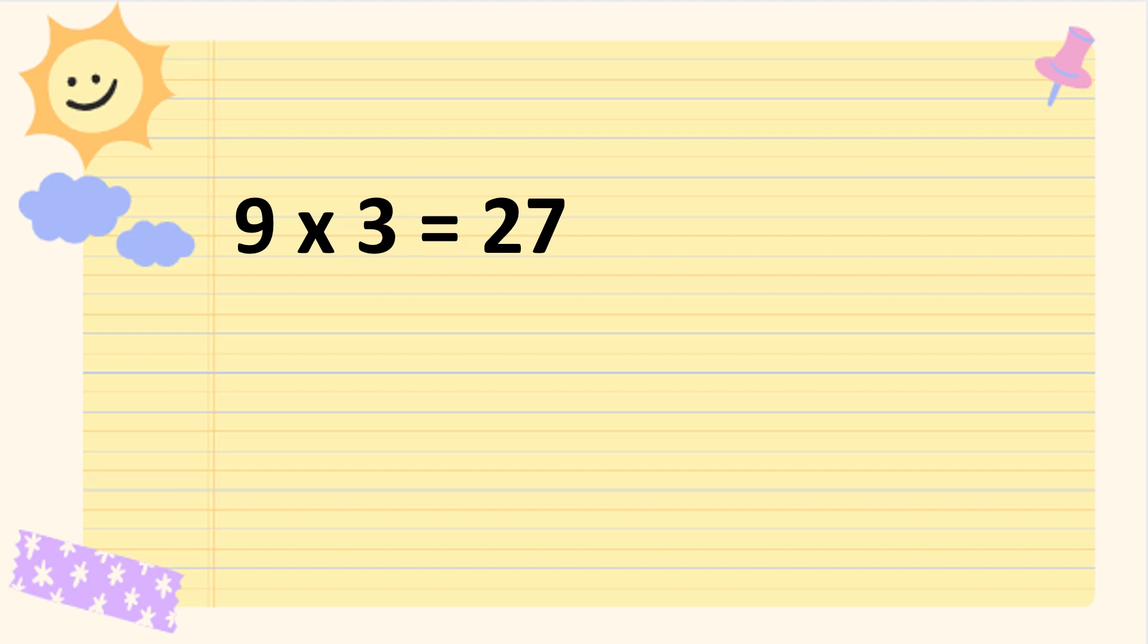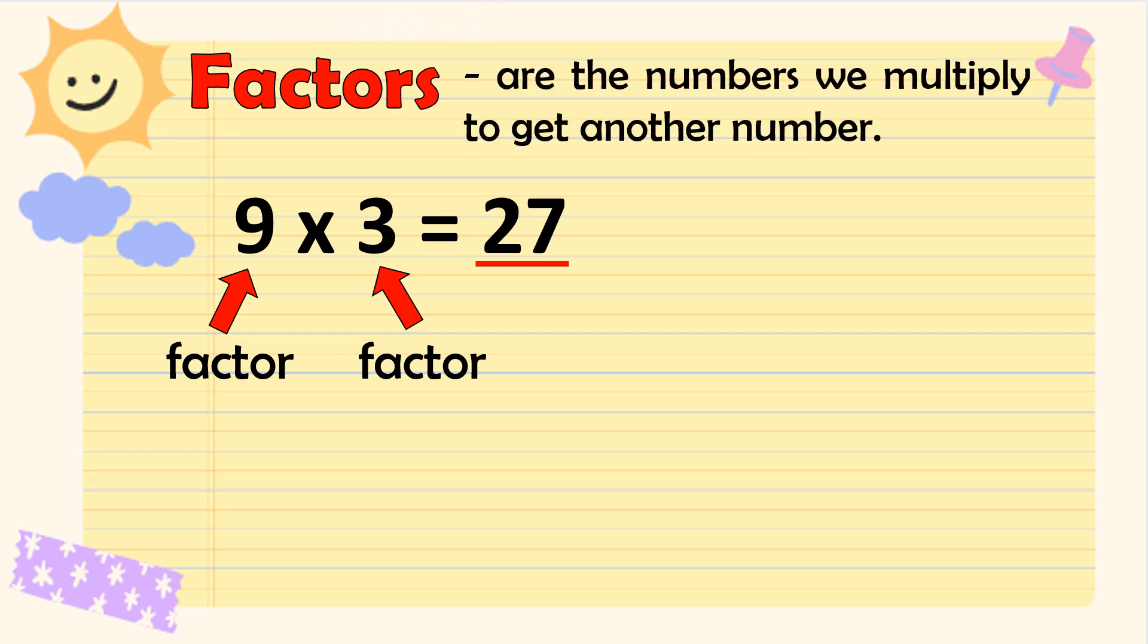Let's study the problem. 9 times 3 is equal to 27. So, kanina, diniscuss natin na ang sagot sa number na may multiply natin ay product or multiple. So, ang 27 ay ang product or ang multiple. Ngayon naman, ano ang kaya ang tawag natin sa 9 at 3? Tama! Ang tawag natin dito ay factor. When we say factors, these are the numbers we multiply to get another number. Ito daw ang mga number na may no-multiply natin para makuha ang product.